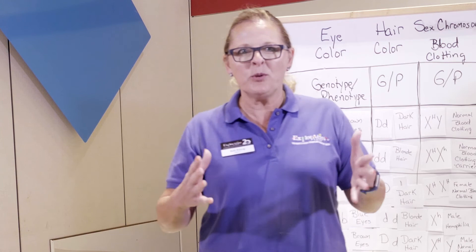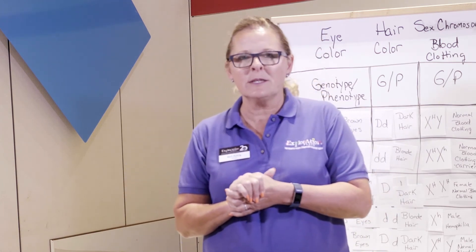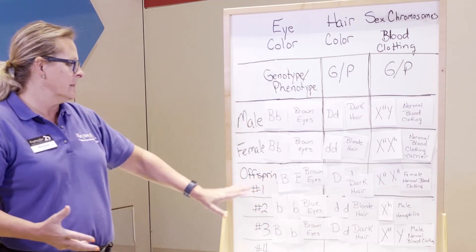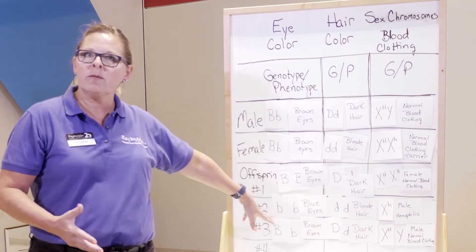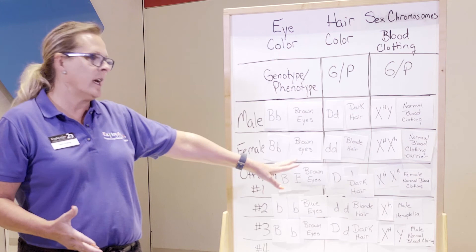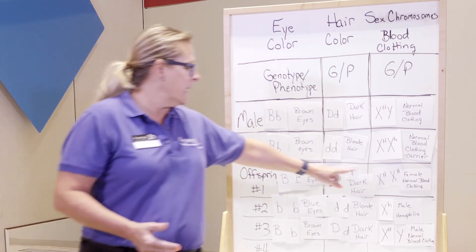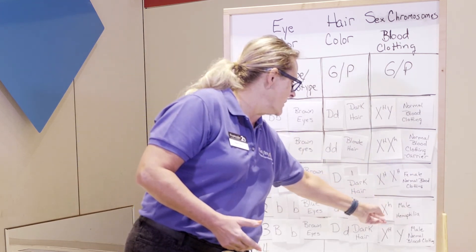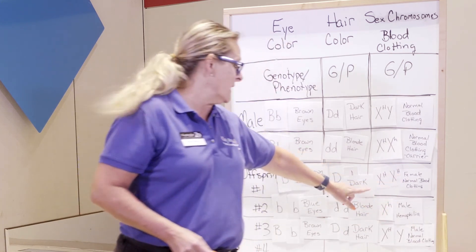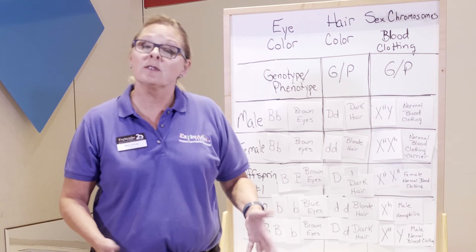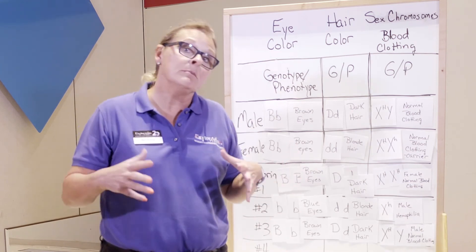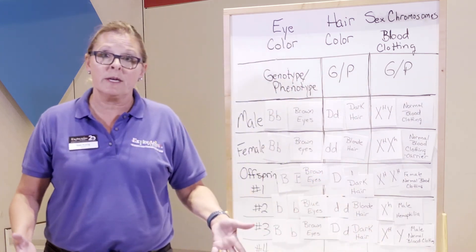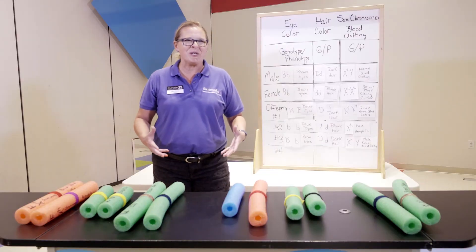Welcome back. I hope you had fun making your children of your parents. Now we're going to wrap up and do some questions. I made a few more offspring — we have three. Two have brown eyes, one has blue eyes. Two have dark hair, one has blonde. We have a girl with normal blood clotting, a boy with a lowercase h so he's hemophiliac — they'll need to be careful about how he plays because they don't want him to bleed too much. And another boy with normal blood clotting. You can have lots of traits and variations in your family.